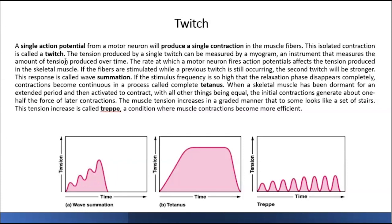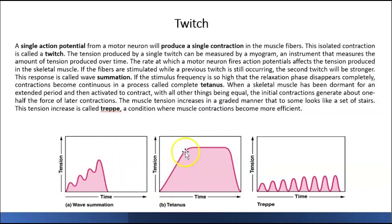If you change the frequency of electrical stimulus, then you can change the strength of twitches. For example, they increase the strength of an electrical stimulus and look at the muscle contraction — you see it increases. And if we look at the other one, you can see here they change the frequency, and in this one you can even see the relaxation.